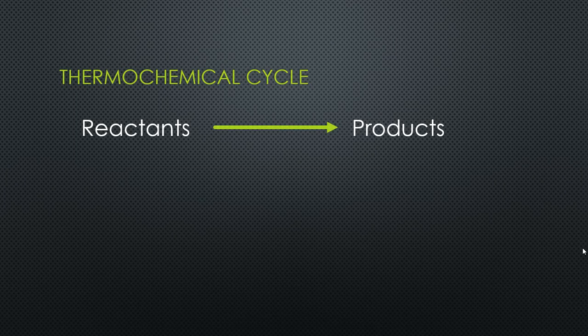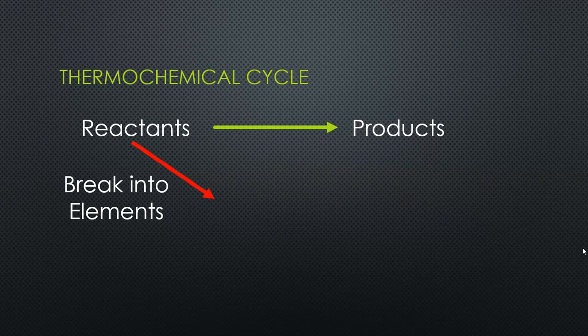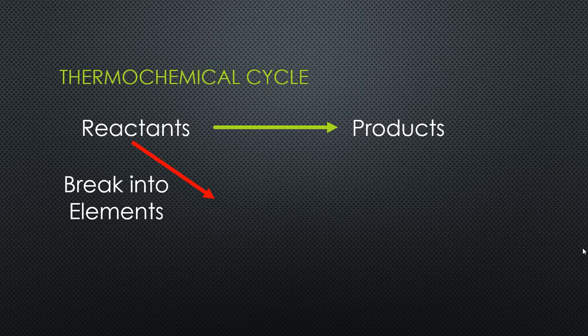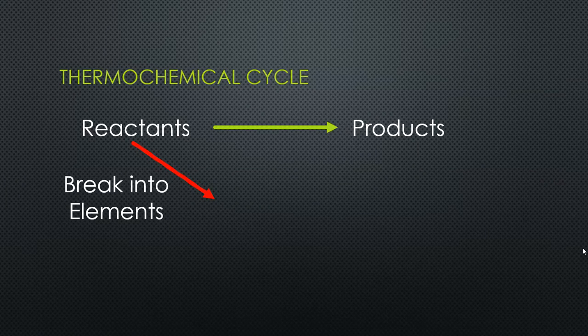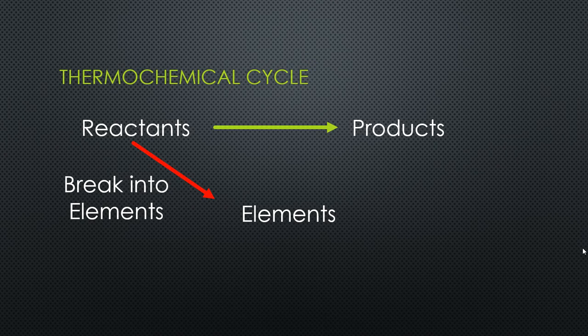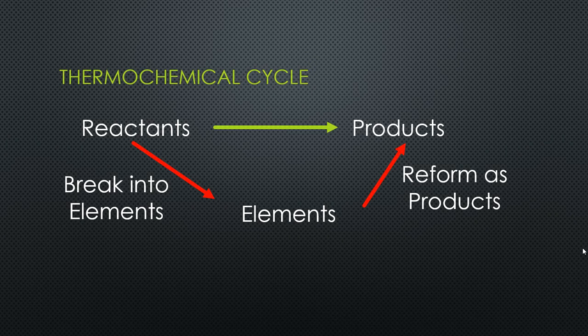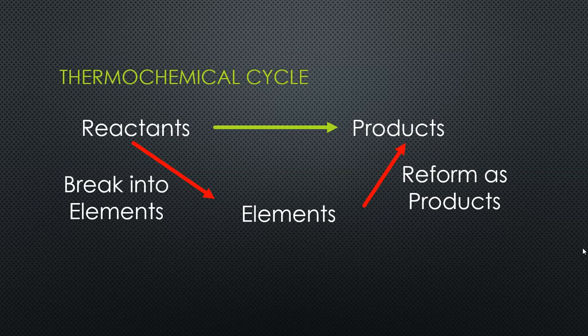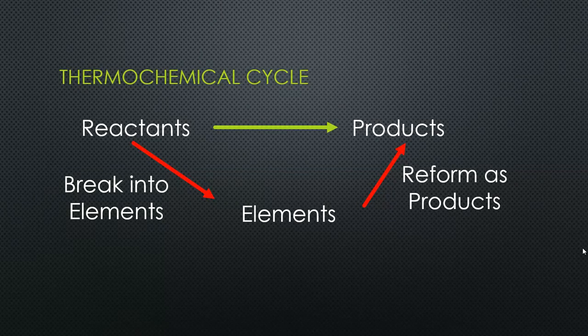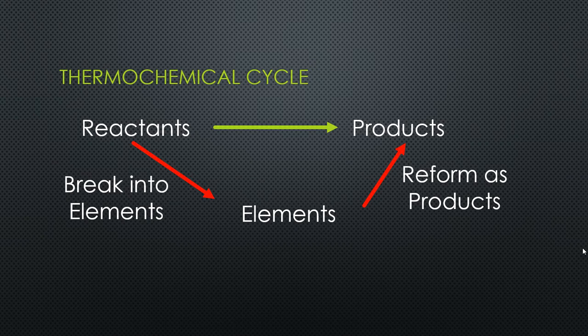For the thermochemical cycle, you've got the reactants going into products, but then we take the reactants and imagine breaking them down into their constituent elements. We end up with the elements—that's going to be our intermediate step—and then we reform all of those elements as products. By looking up certain values in tables, we can work out exactly what the values on those two red arrows are going to be for the enthalpy change. By using those numbers together, we can work out the overall enthalpy change for those reactants turning into products.